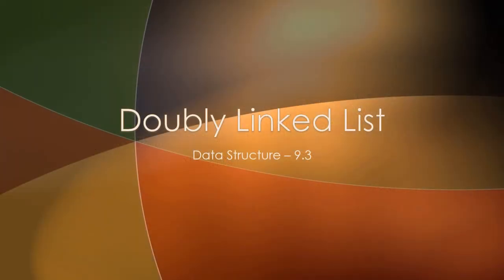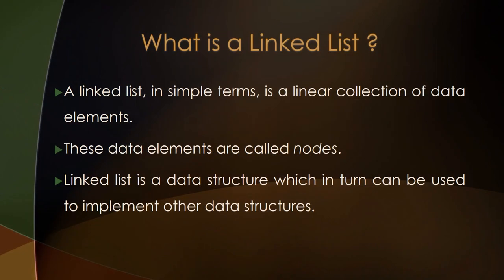Welcome to the data structures. Today we would be covering something known as a doubly linked list. But before we dive into the depths of what is a doubly linked list, first I would like to cover a few basics of what is a linked list. A linked list in simple terms is a linear collection of data elements. These data elements are called nodes. A linked list is a data structure which can be used to implement other types of data structures as well.